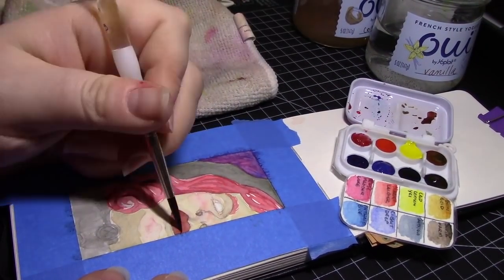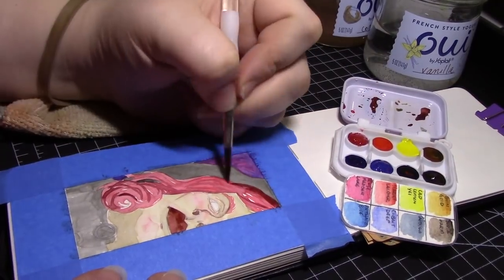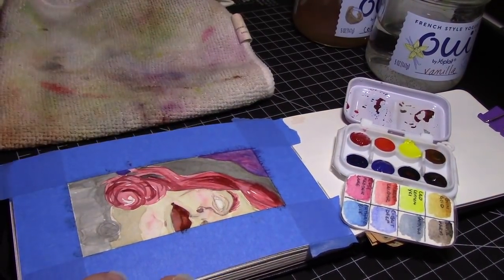This paint doodle was done in the Moleskin watercolor book Eve gave me in our subscription box swap. And while I still do not recommend this sketchbook, I really don't want to waste the paper, so it's probably going to get plenty of use.